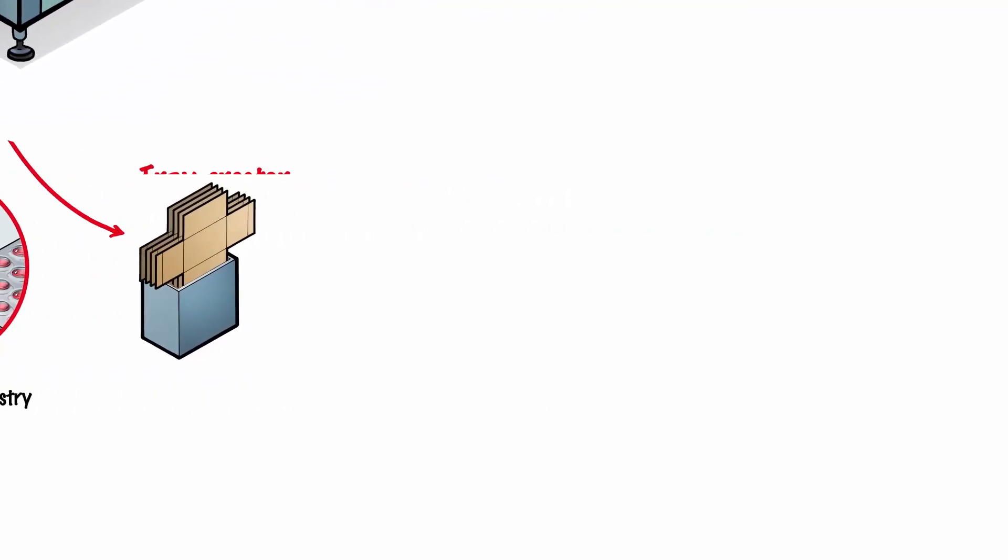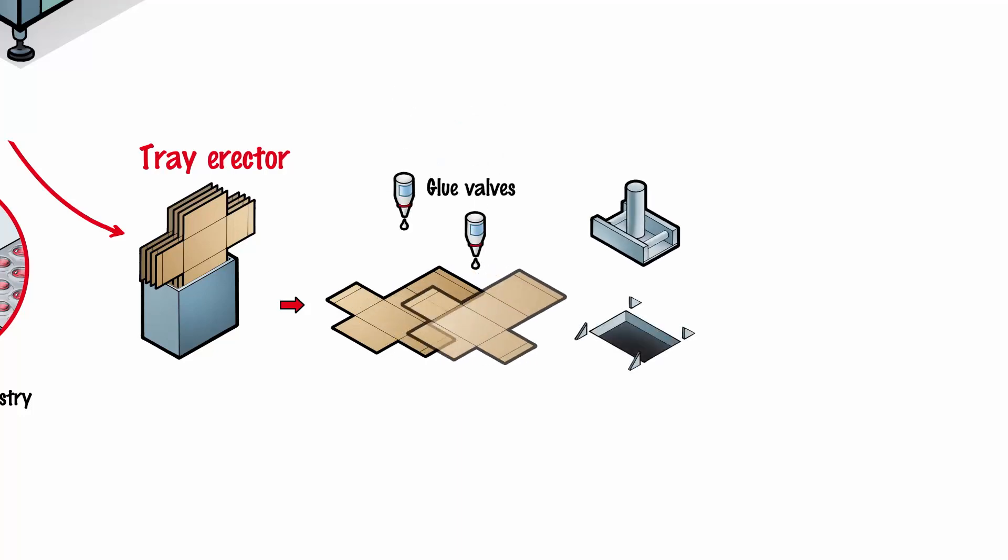Option 2. A vacuum cup removes the pre-folded blank from the magazine and sets it down. As it is being fed into the machine, glue valves apply a line of glue to the box, which then comes to a halt underneath the erector punch.